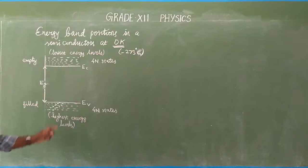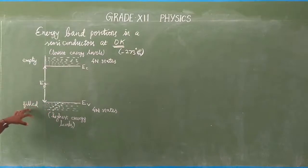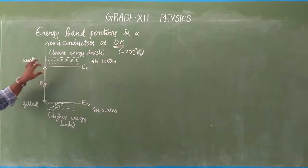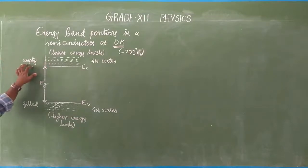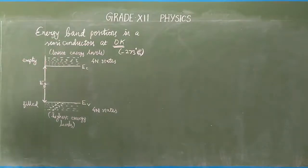In the valence band at zero Kelvin, the highest energy level is filled with most of the electrons, but in the conduction band the electrons are mostly absent since it has the lowest energy level. Now we are going to study materials based on their energy bands.